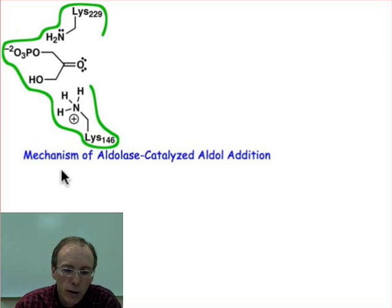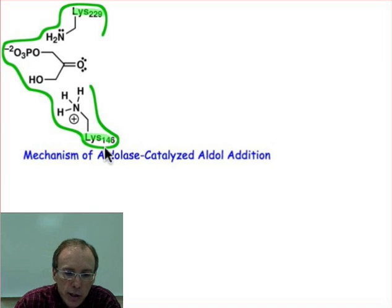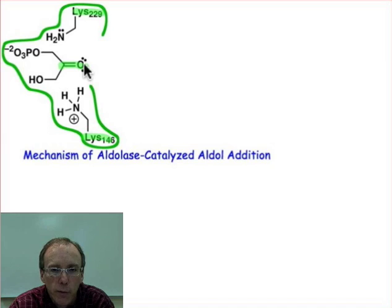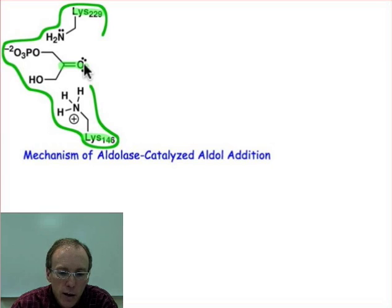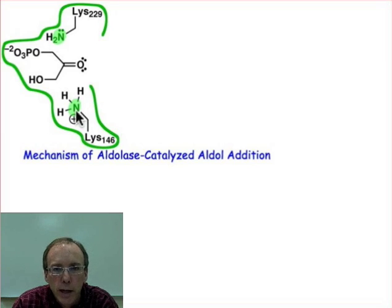The aldolase enzyme has in its active site two lysine side chains. Anytime we see two lysine side chains and a substrate that has a carbonyl, we should think about iminium ion formation, enamine formation, and we should also think about bifunctional catalysis. Notice that because of pKa modulation, these two lysines control the protonation state so that one of these lysines is going to be unprotonated and the other would be protonated.